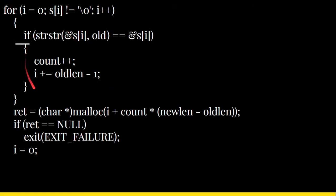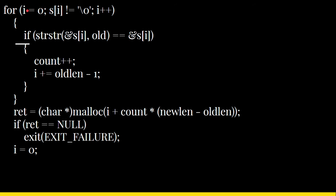Next, a for loop finds how many times the old string exists in the given string. The loop runs from i=0 as long as s[i] is not equal to '\0' (the null character marking the end of the string), incrementing i by one each iteration. Inside the loop, strstr is used to check whether the old string exists within the given string.